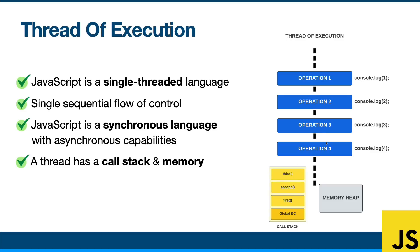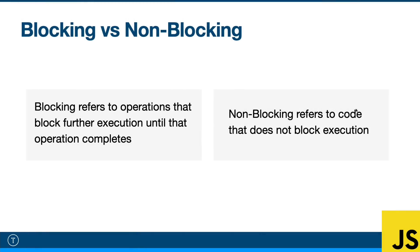Where we run into a problem is when one of these operations takes a while. For instance, if it's fetching data from a server, or maybe you're in Node.js and it's writing or reading data to or from a file, that could take a while and you're waiting on that to complete before the next operation. That's what we call blocking code or blocking operations — it refers to operations that block further execution until that operation completes. Non-blocking is just the opposite — code that does not block execution.